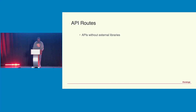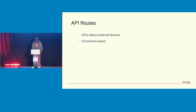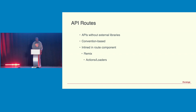For API routes, you can build APIs without external libraries, integrating directly with the meta-framework rather than using something like Nest.js separately. These are convention-based, defined within predefined folders in your application, or they can be inline in the route component.